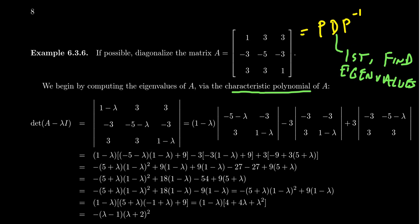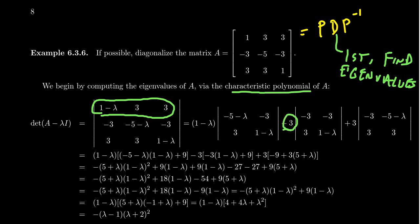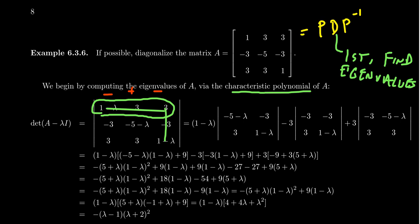This is a three by three determinant, and we're going to use cofactor expansion across the first row. The first minor is the one associated to (1 - lambda), which comes from taking away the first row and first column. The next term gets a negative three, because our cofactors follow a plus-minus-plus pattern. We expand across the first row, killing off the second column for that minor. And then for the last one, we get plus three, taking away the first row and last column.